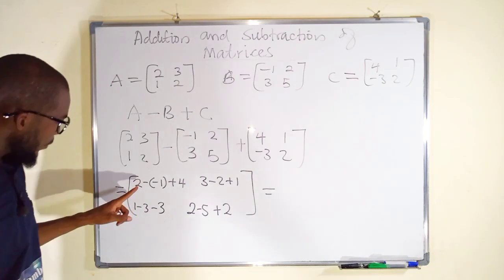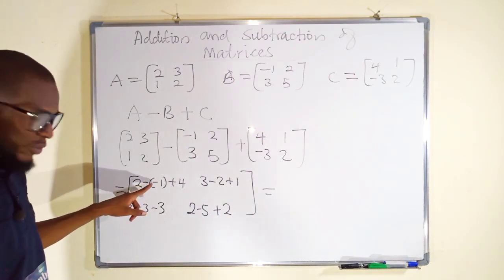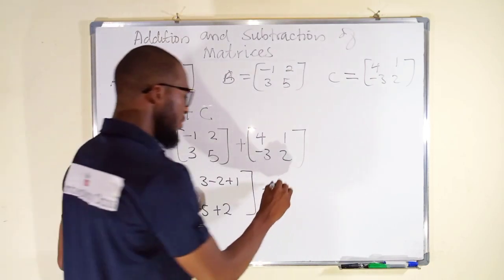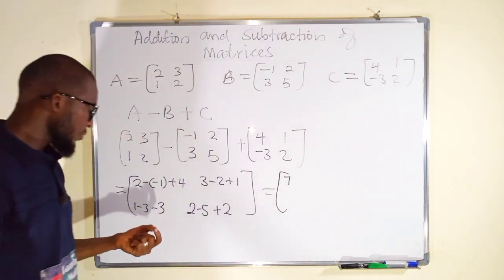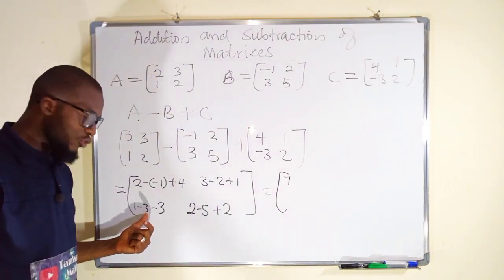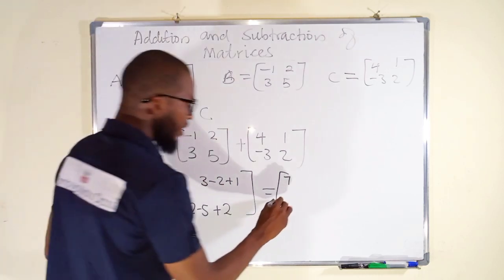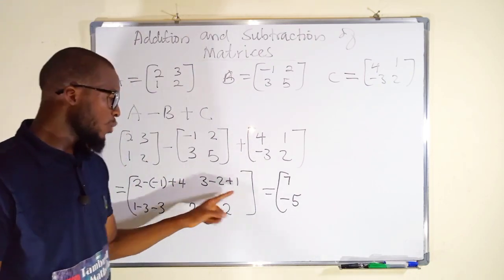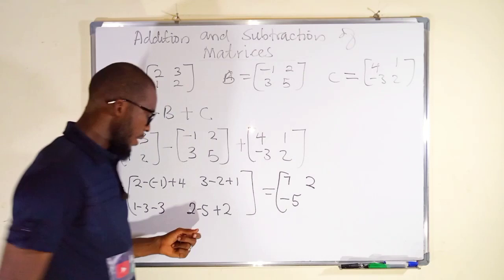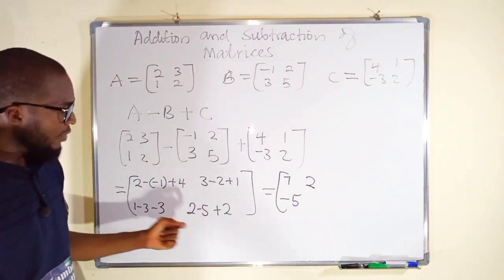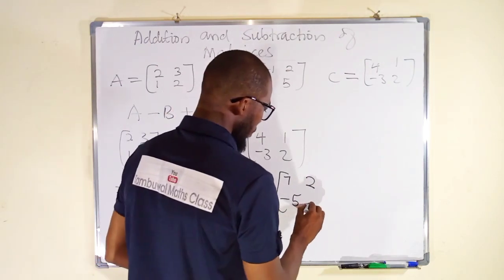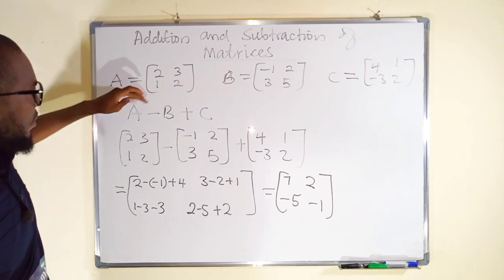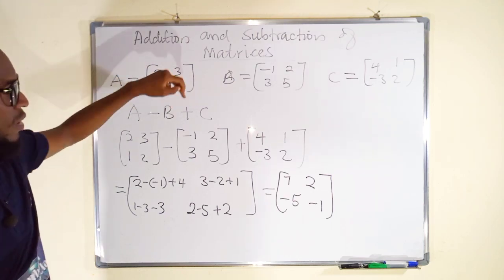This is plus because of minus minus. So two plus one is three, then three plus four is seven — we have seven here. One minus three is minus two, then minus two minus three is minus five — we have minus five here. Three minus two is one, then one plus one is two. Two minus five is minus three, then minus three plus two is minus one. So this is the result after performing A minus B plus C.